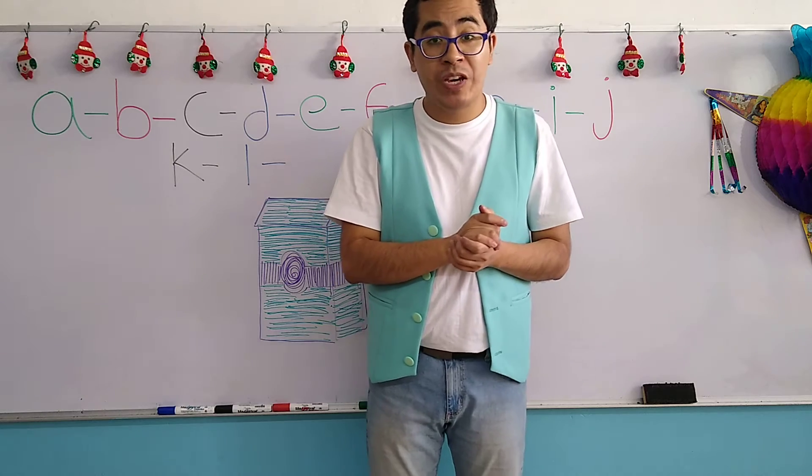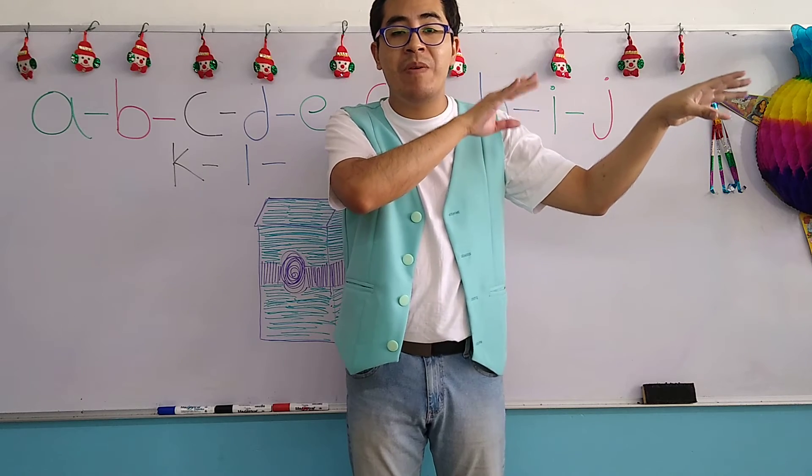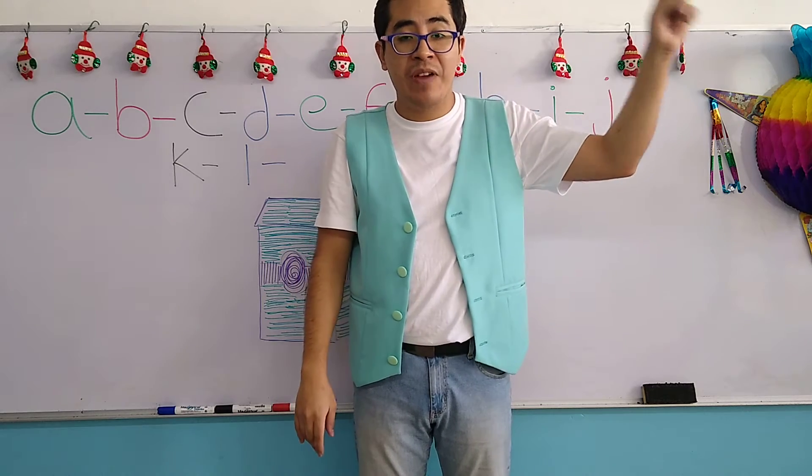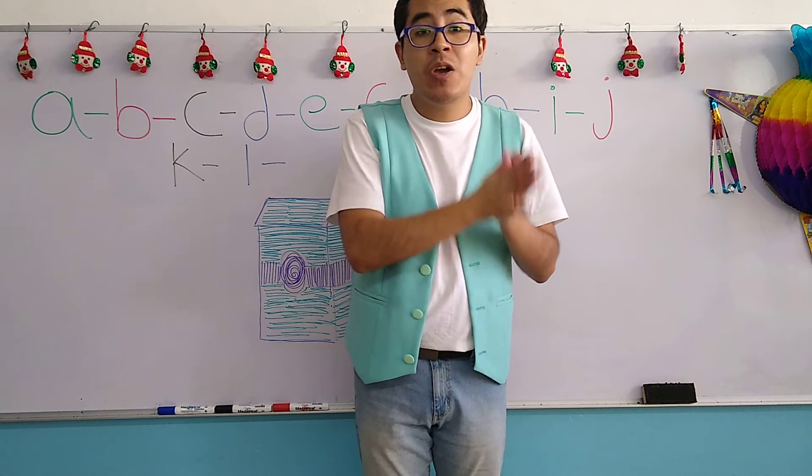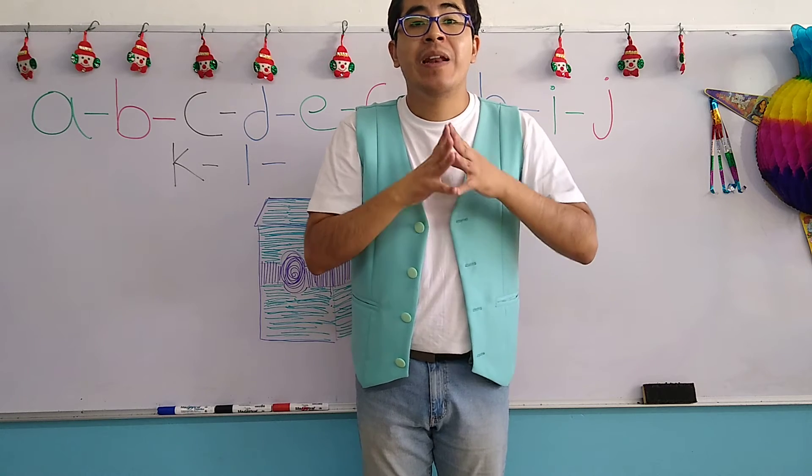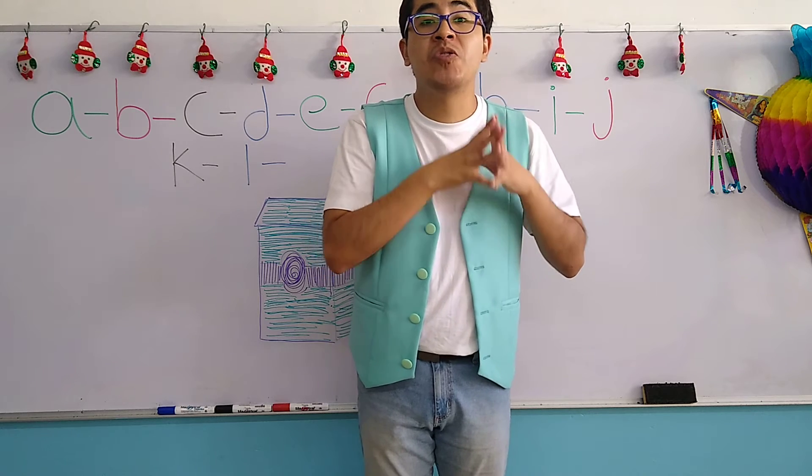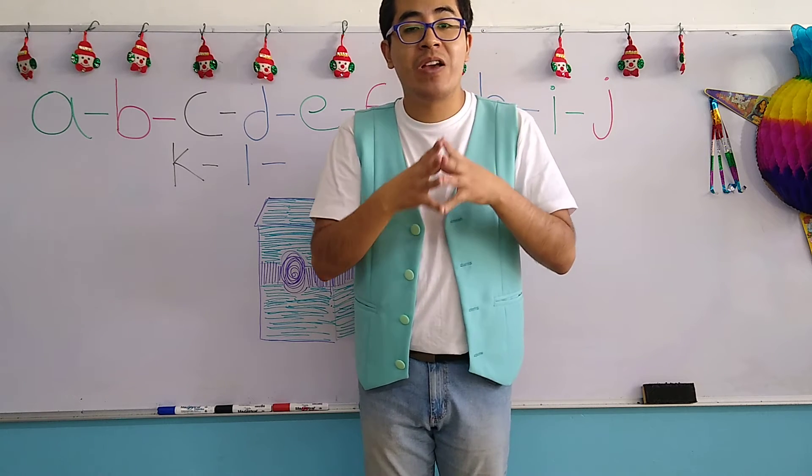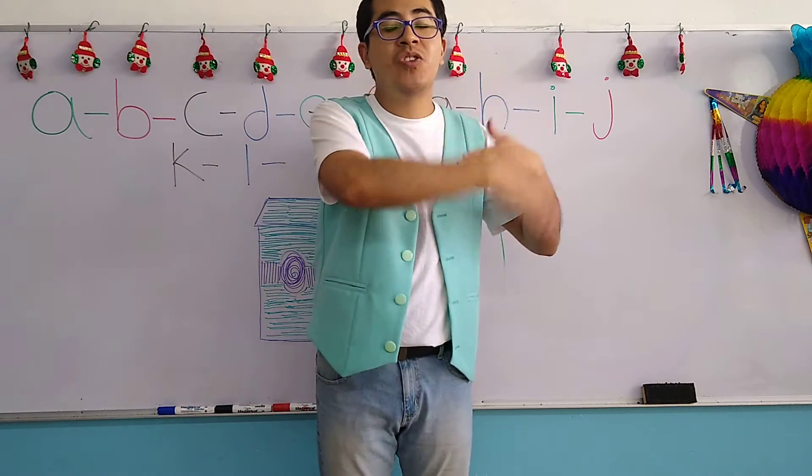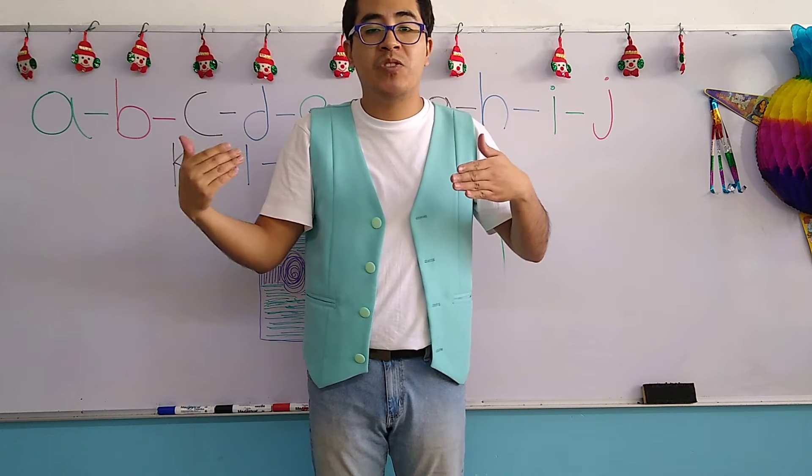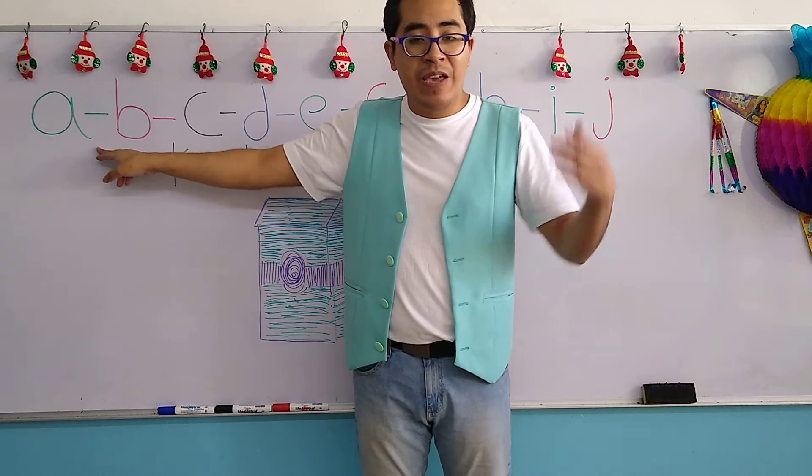So today, before we start with the new object, once again we have to review. We have to go back to the beginning and remember the letters starting with letter A and finishing with letter M. For today, instead of mentioning objects, we are going to mention names of people that begin with those letters.